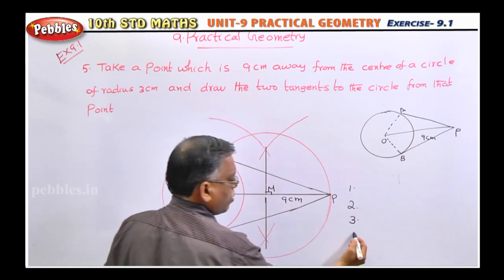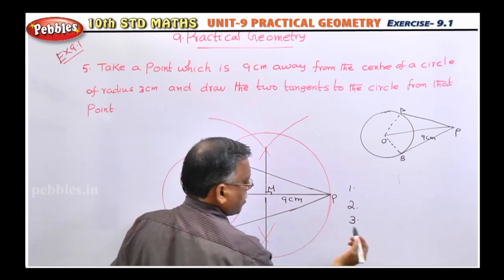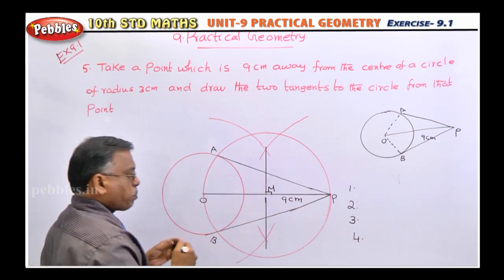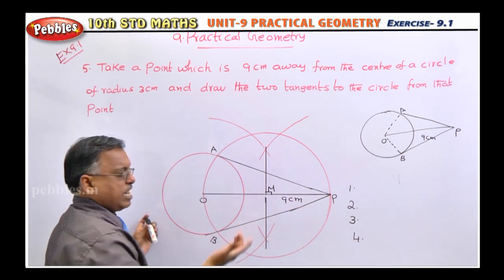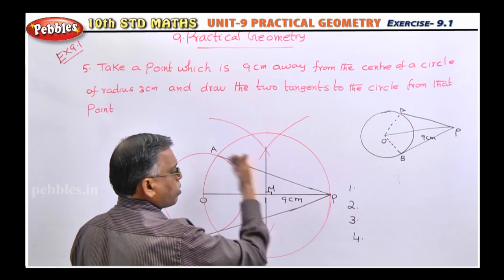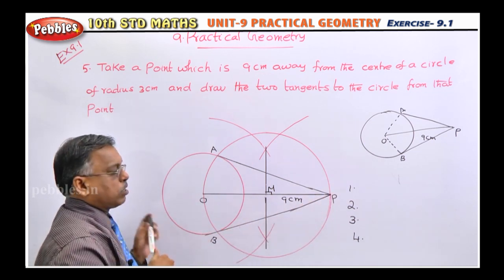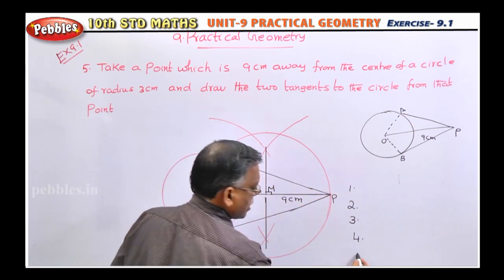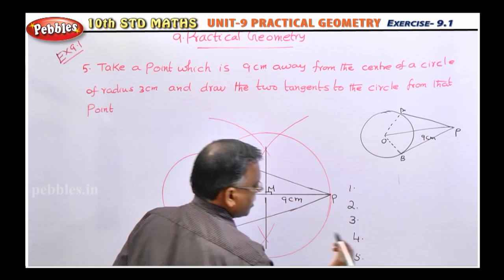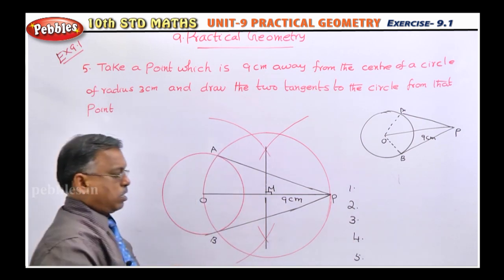That is your fourth step. Fifth step is very easy: draw PA and PB. That is your fifth step. Those are the required tangents.